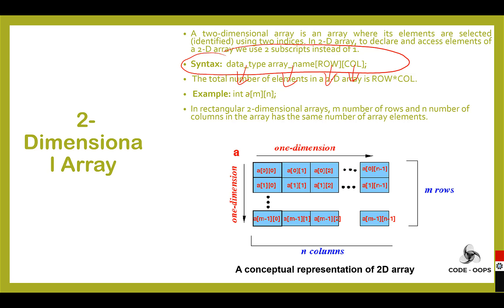For example, int is the data type, 'a' is the name of the array, m is the row size and n is the column size. The total number of elements in the array is m multiplied by n.